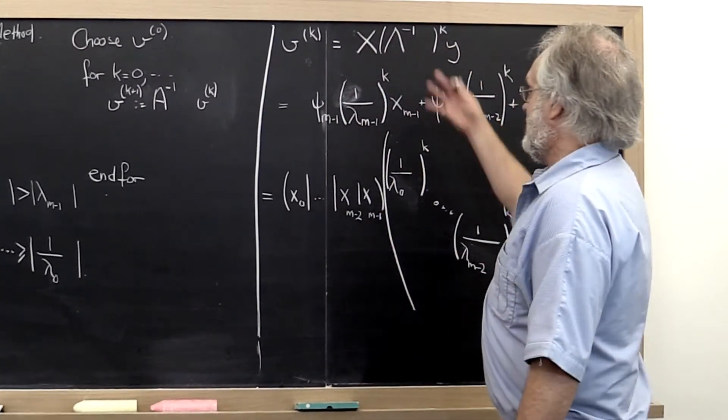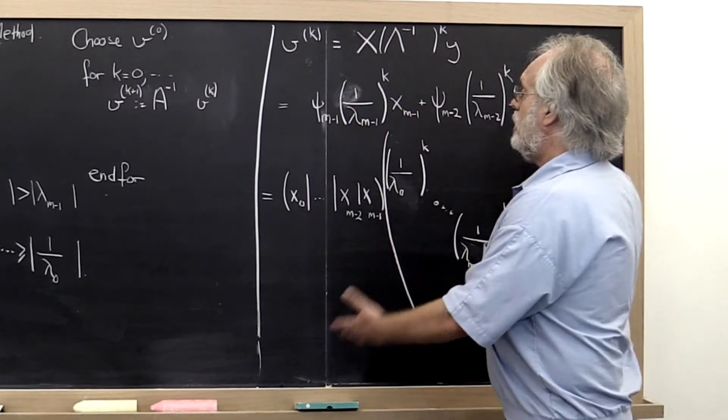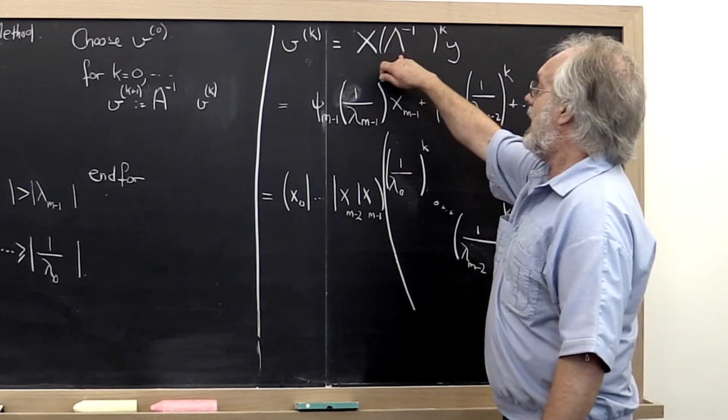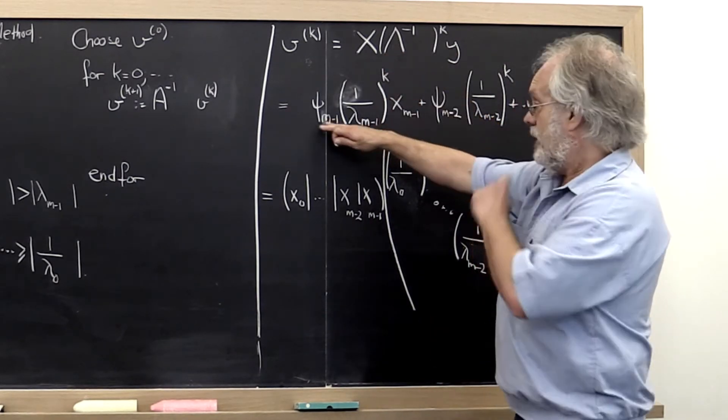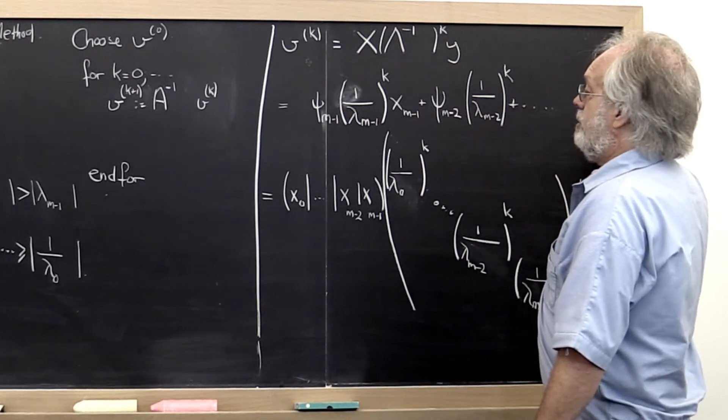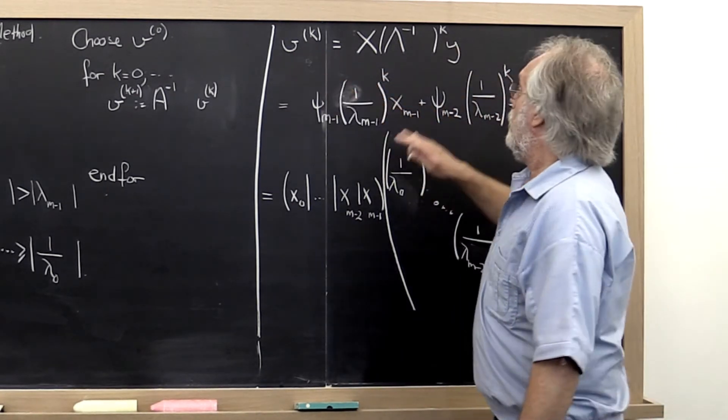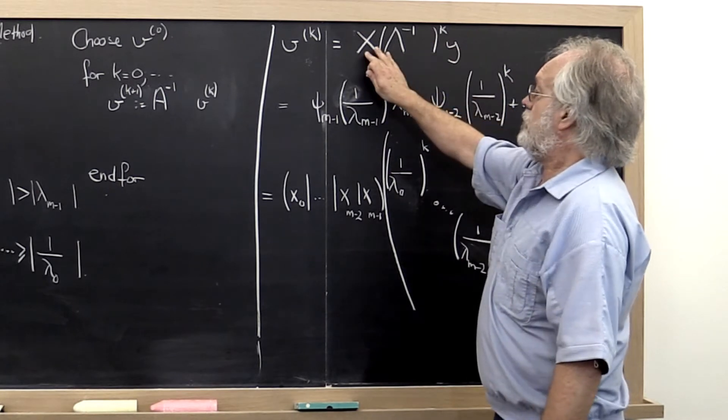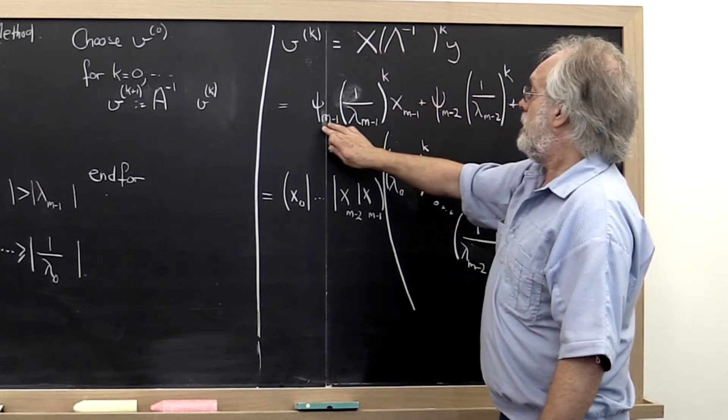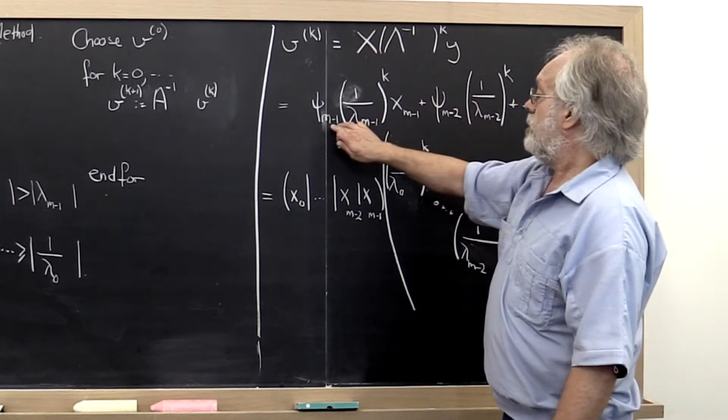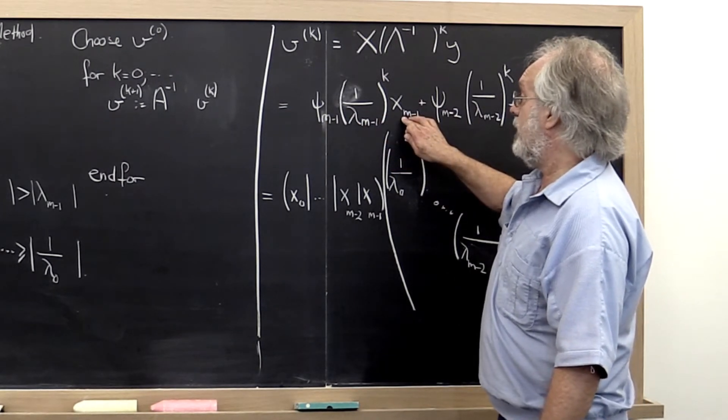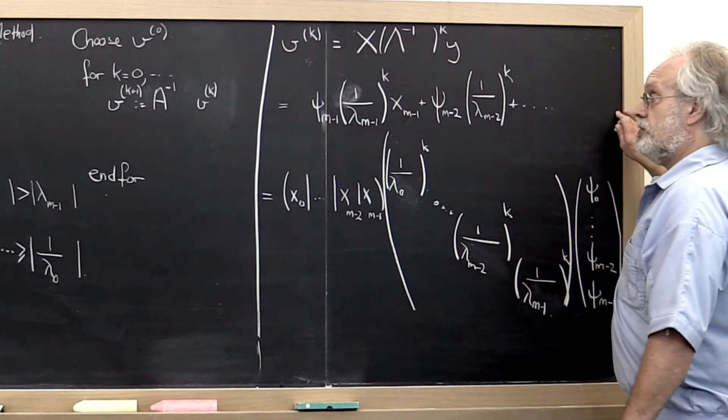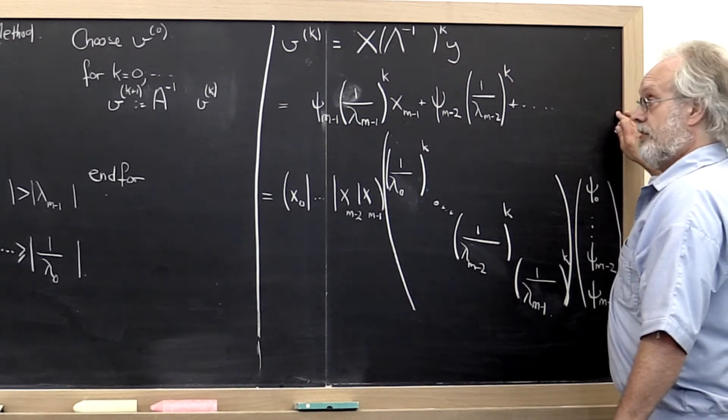Now in analyzing that, we get exactly what we had before except that lambda is replaced by lambda inverse. And then here what I have done is I've written our vector v0 as a linear combination of the columns of x. But now I ordered them from the eigenvector associated with the smallest eigenvalue to the eigenvector associated with the largest eigenvalue.